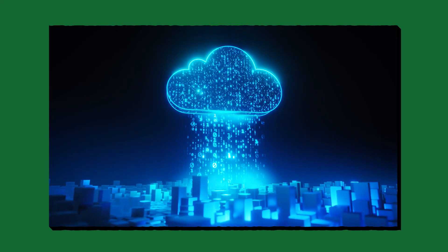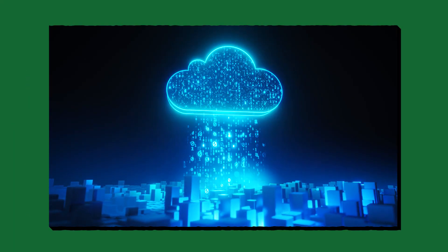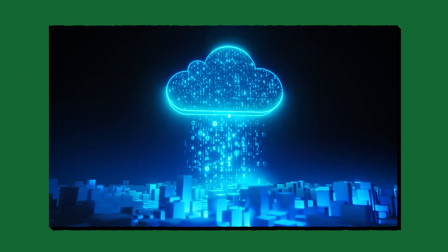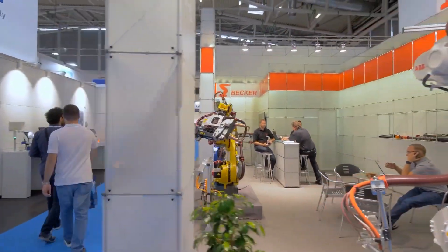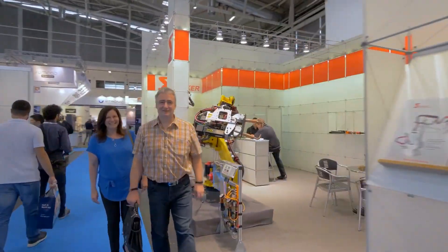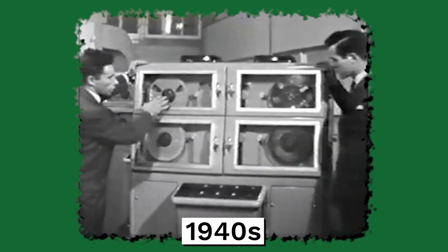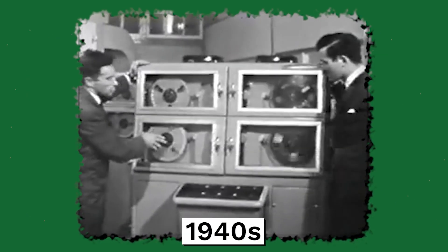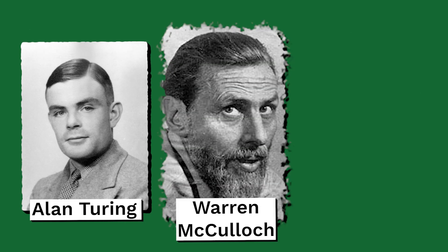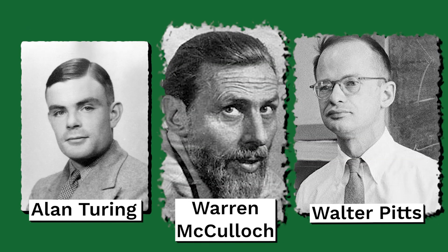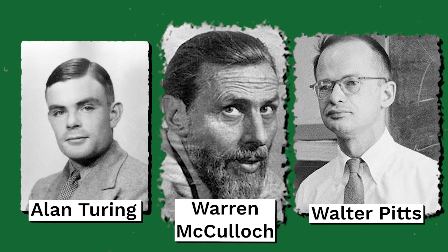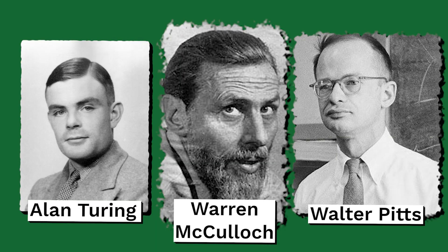Number 2: The field of AI is much older than people realize. You might think that AI is something recent, maybe 10 to 20 years old. However, the history of AI goes back to the 1940s, where pioneers like Alan Turing, Warren McCullough and Walter Pitts started writing about how computers could think.